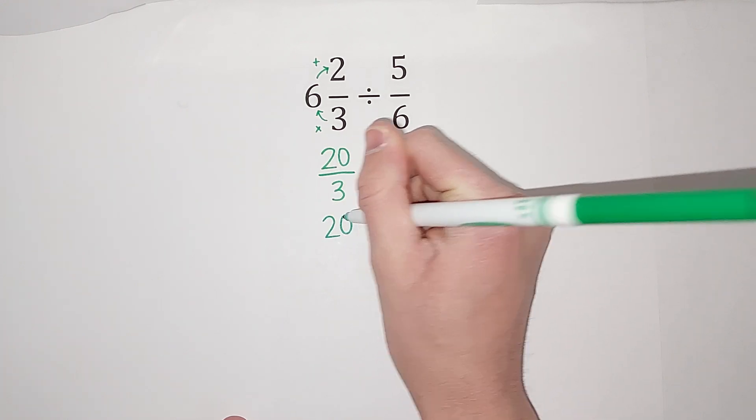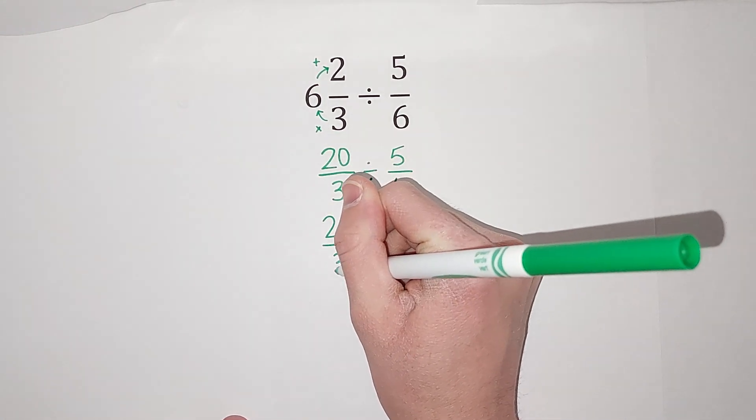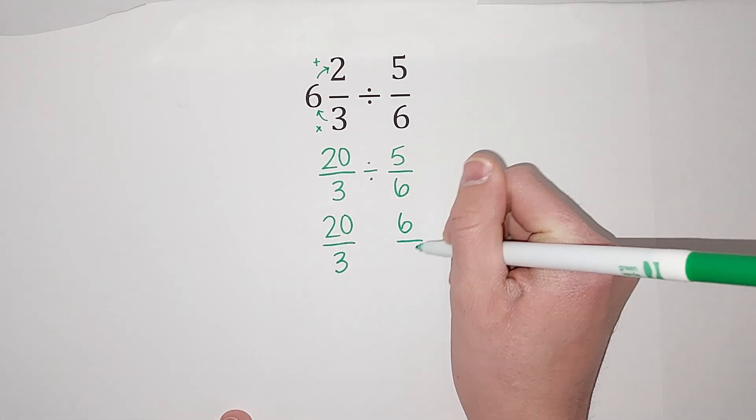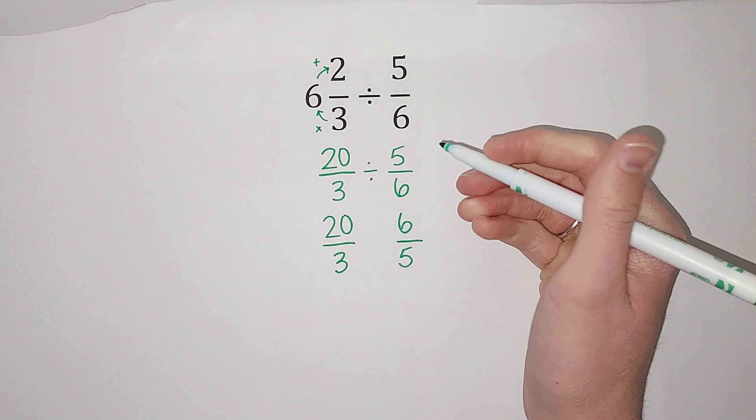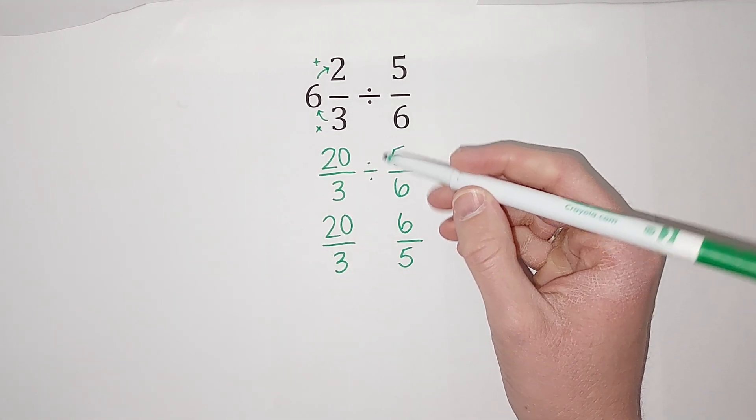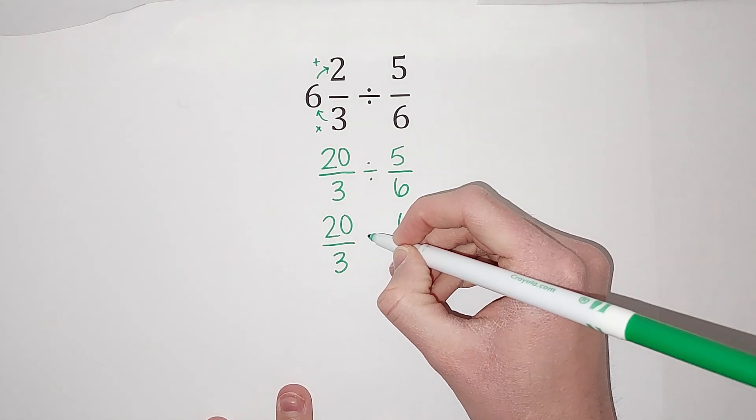So we've got 20/3, and then we're going to flip this guy, then I won't have to say sixths anymore. Yay! It's 6/5 now, which is not much easier to say. So we flip the second one, and we multiply.